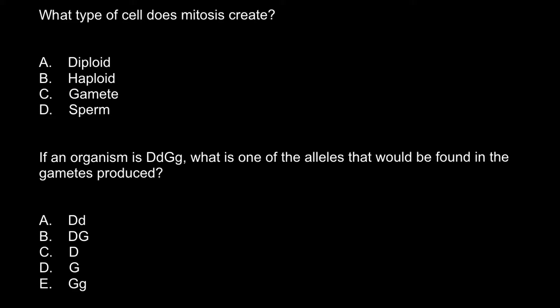So actually, mitosis is division of the autosome and autosome produces autosome. So diploid cell would produce diploid cell. So the correct answer would be answer A.